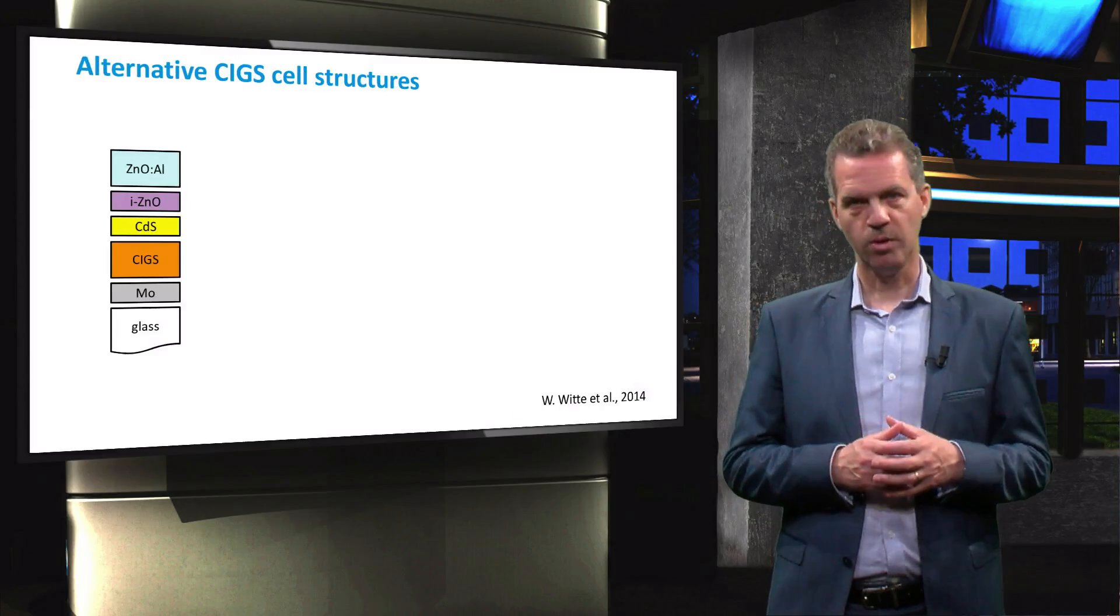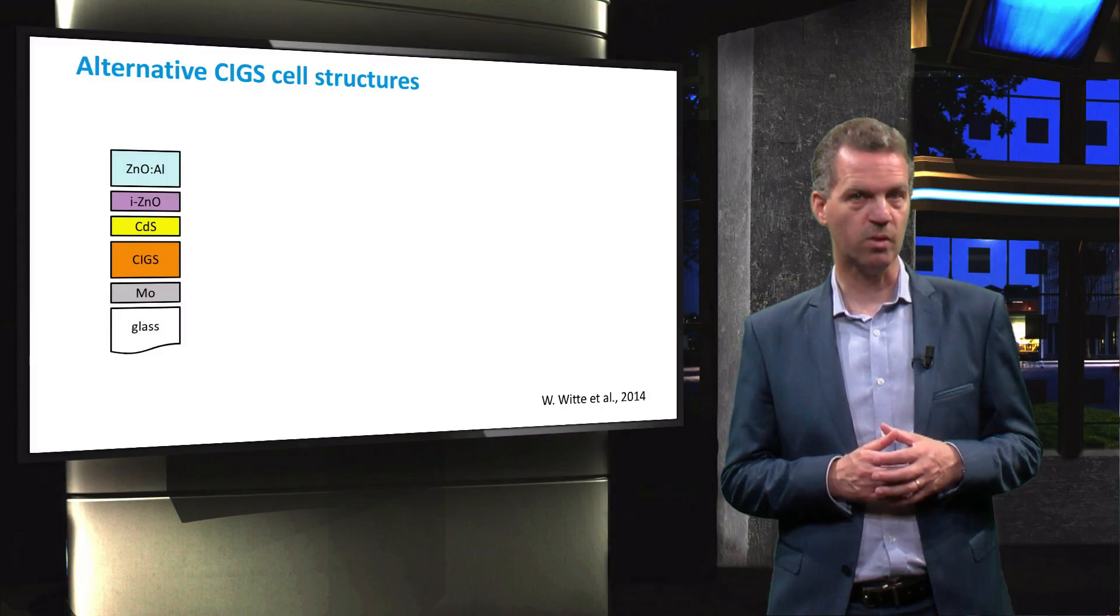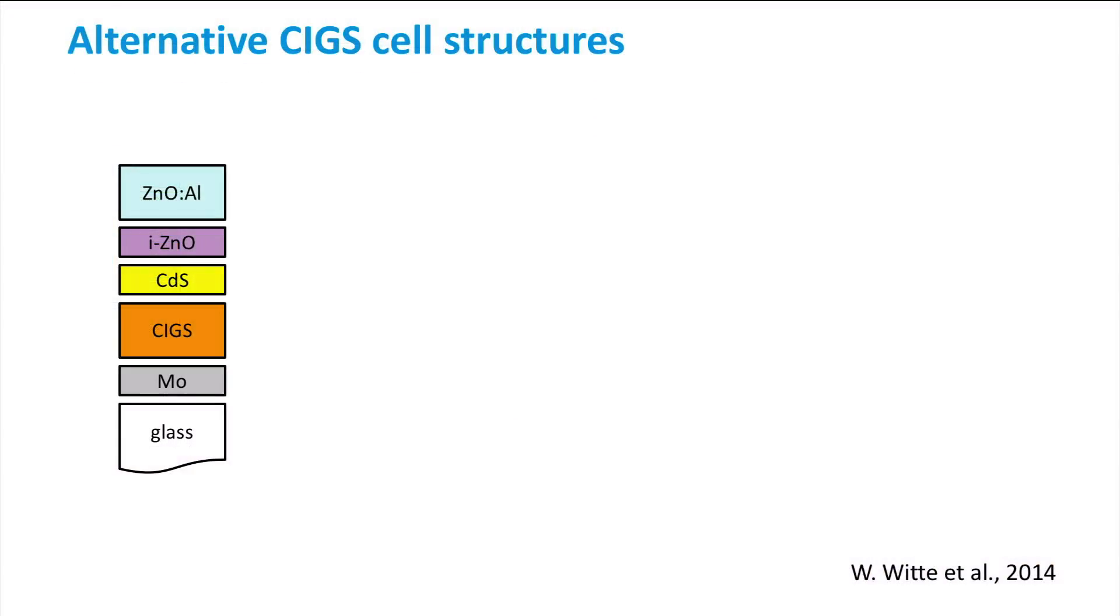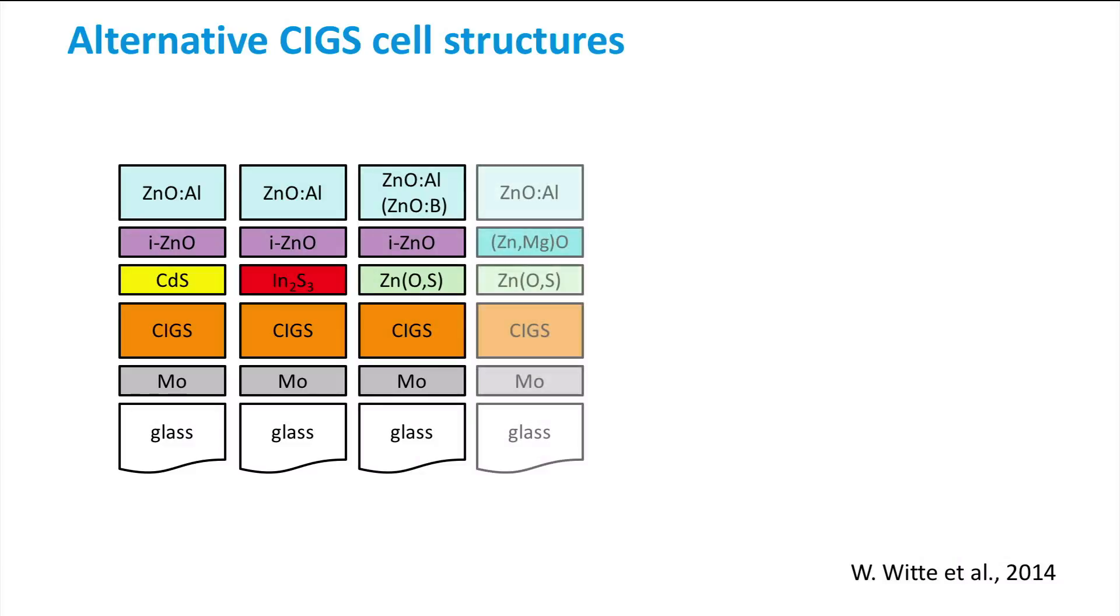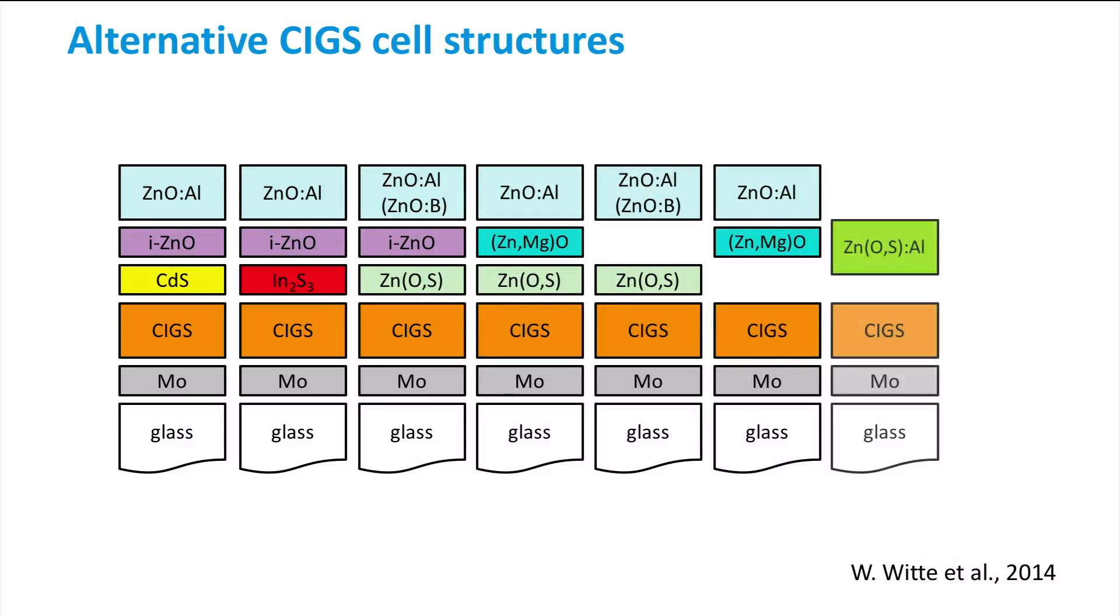Although the cadmium sulfide layer has many advantages, the environmental issues made the industry to look for alternatives. This overview shows on the left-hand side the traditional cell structure, along with many alternative structures. Some of the cadmium-free cells can even have a higher conversion efficiency than the traditional cell with the cadmium sulfide buffer layer.